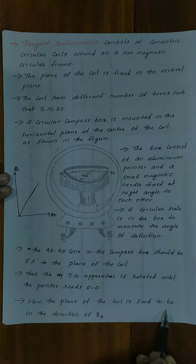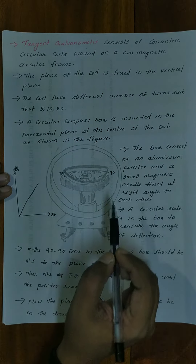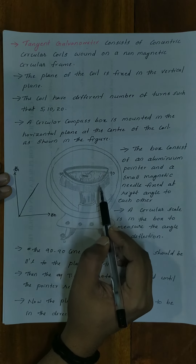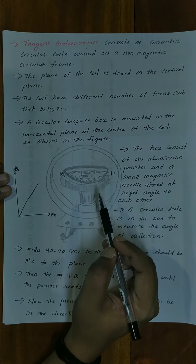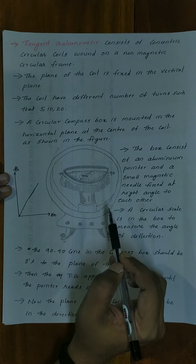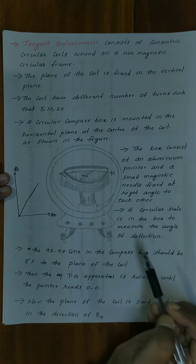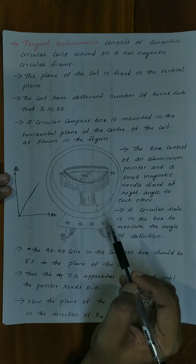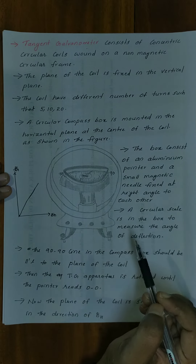Now, the plane of the coil is set to be in the direction of BH, the earth's horizontal magnetic field. This arrangement aligns the apparatus with the earth's magnetic field.